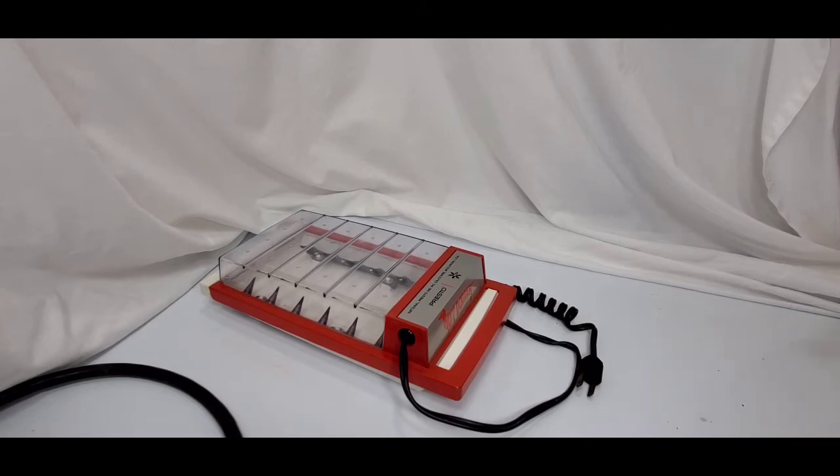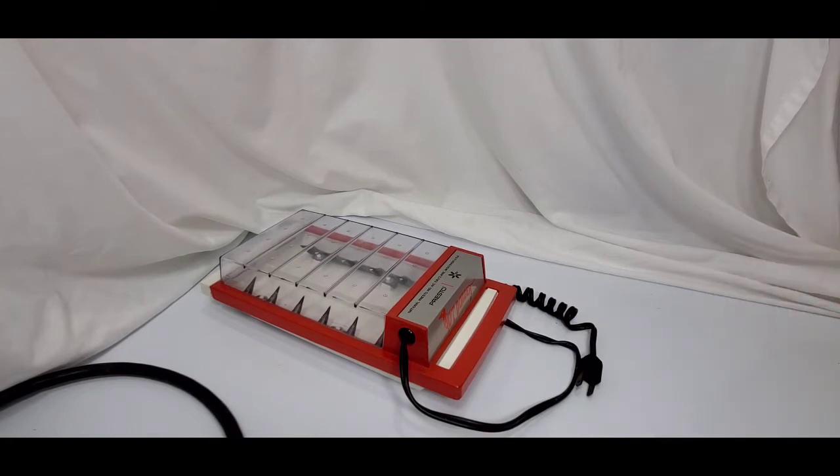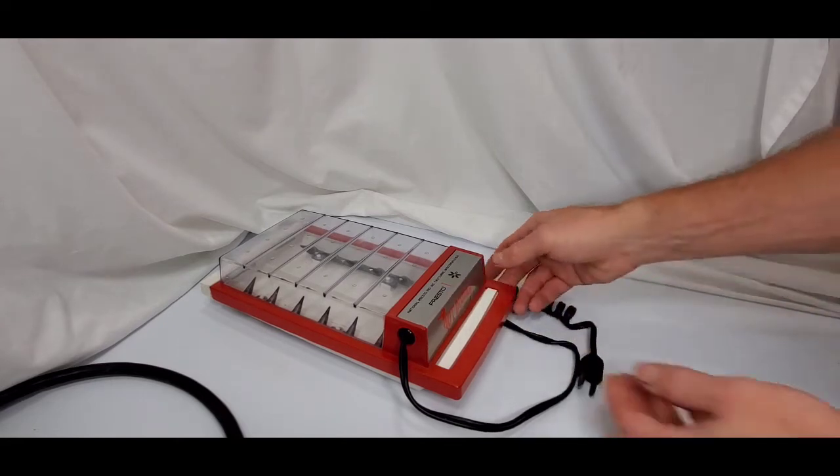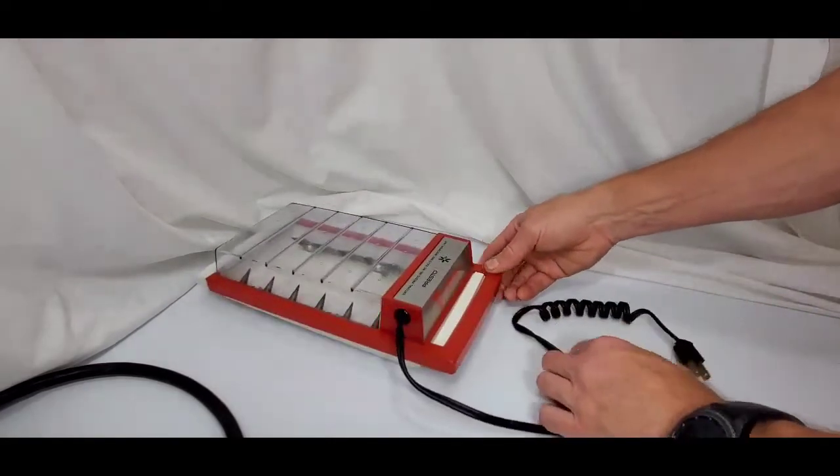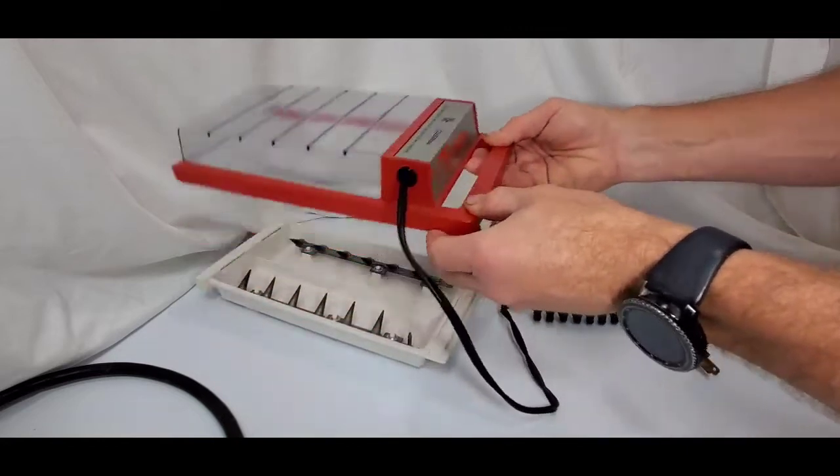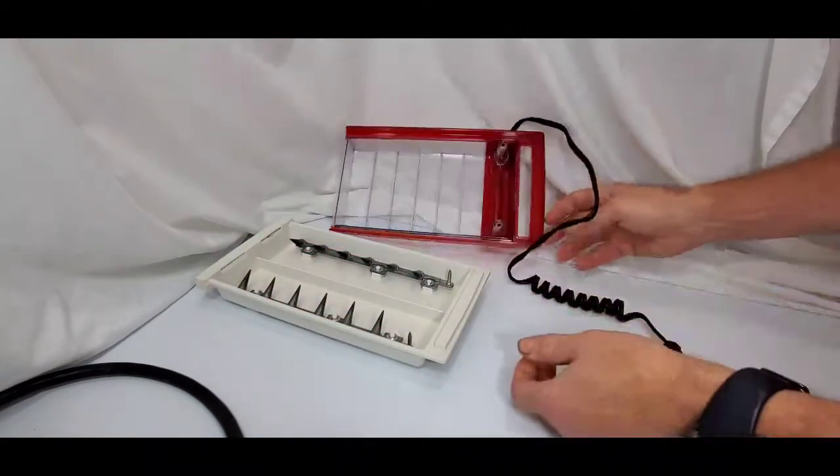Now this is not a new idea of using electricity to electrocute or cook by letting the electricity flow through the substance. Back in the 1960s, Presto made this hot dogger, and it's basically to do the exact same thing I just did, but in a slightly more safe way.